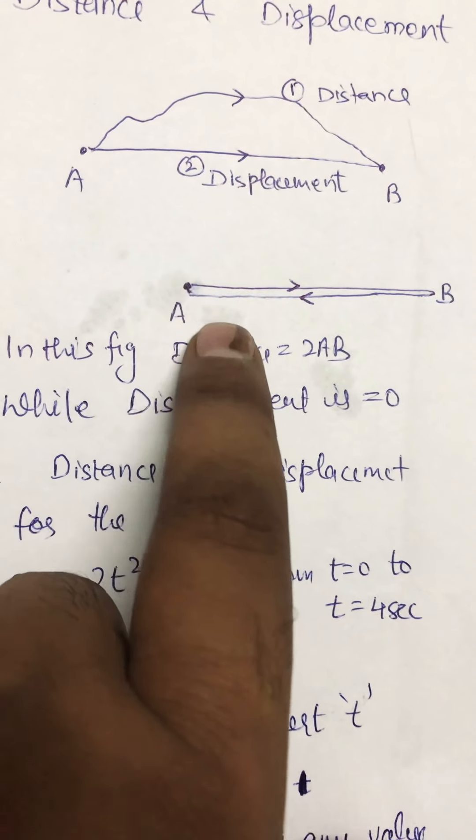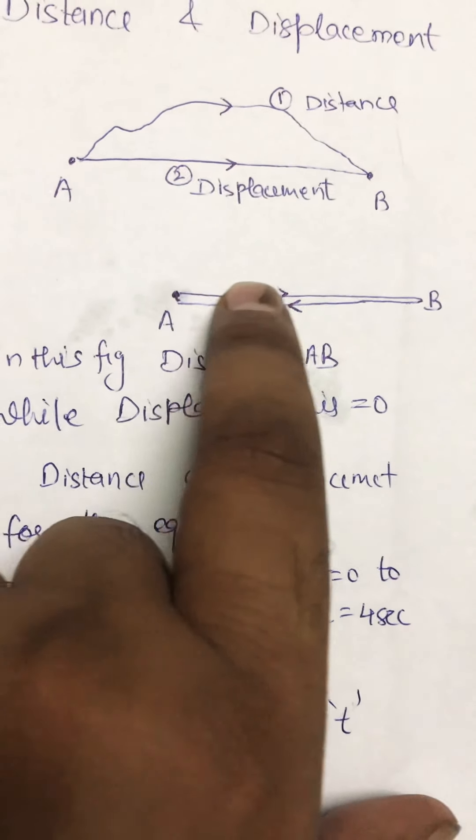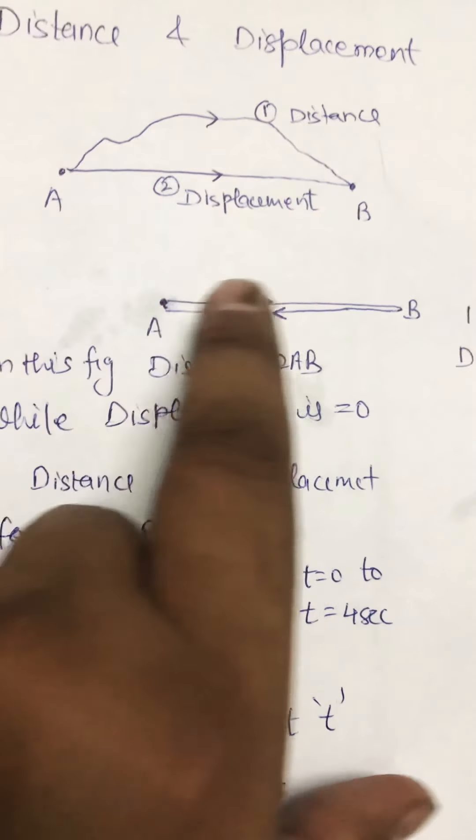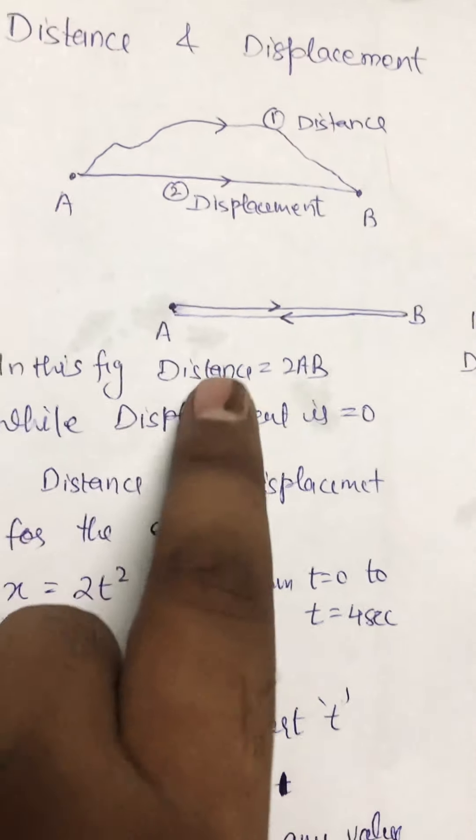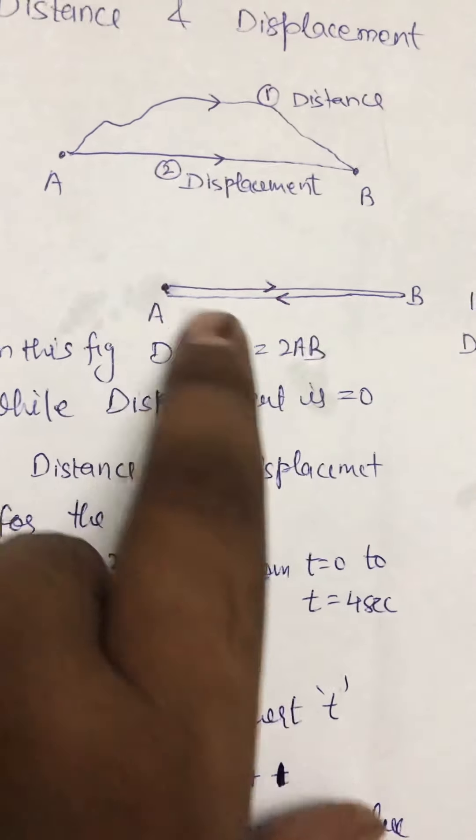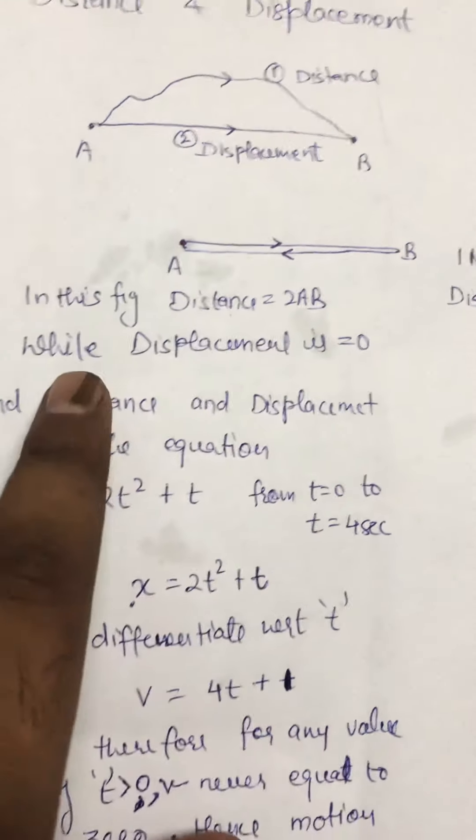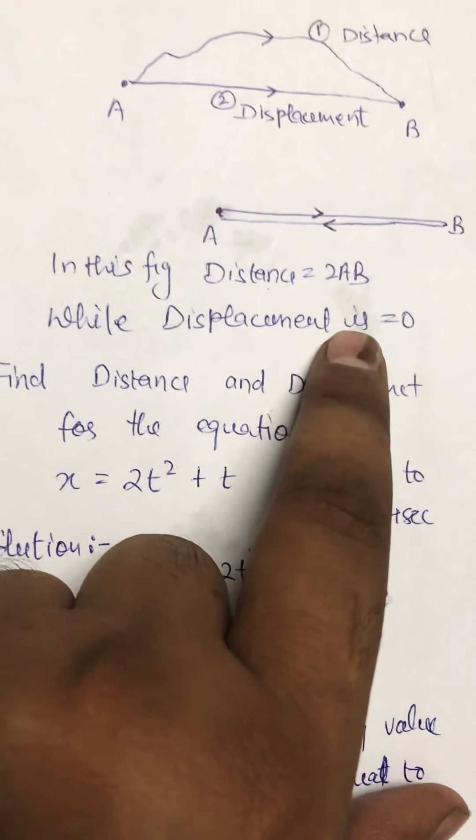Now if we calculate the distance, this AB and coming back again BA, and AB equals BA, then the distance is AB plus AB, that is 2AB. Hence in this figure, distance is 2AB while displacement is zero.